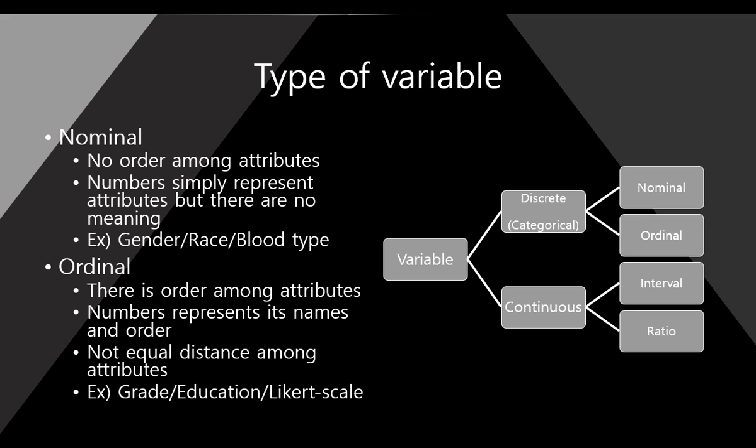The second one is ordinal. For ordinal variable, there is an order among attributes. And numbers represent its names and order. Because we have order here. But the distance among attributes are not equal. For example, grade or education level and Likert scale.